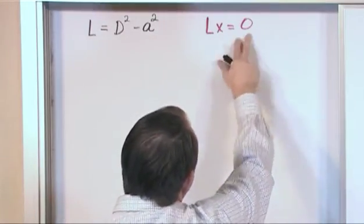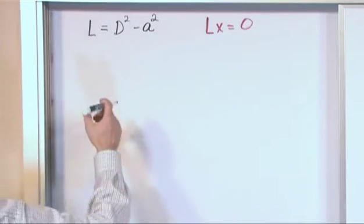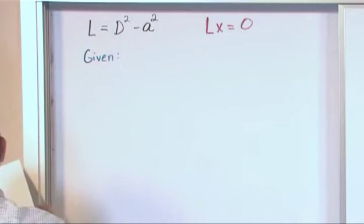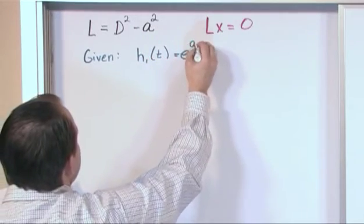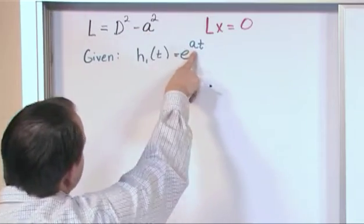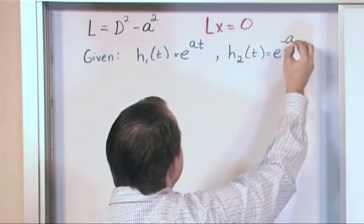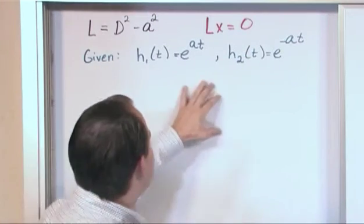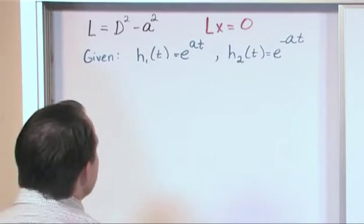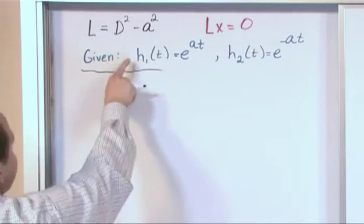If it's equal to something like a function of t on the right hand side, then it'll be what we call non-homogeneous. So in this problem we are given this equation, and we're also given the following: h1 of t equals e to the at. Notice that a appears both in the operator and in this solution. And h2 of t equals e to the negative at. So we have h1 and h2, and remember these represent a general solution.